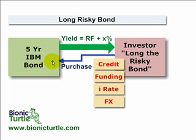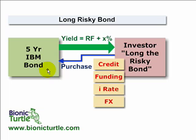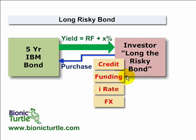Credit risk is simply the risk that the bond defaults. There is also funding risk — the investor has to raise cash in order to purchase the bond. There is interest rate risk or market risk: if the interest rate increases, the value of the bond will decrease even without the corporation defaulting. And finally, there may be some currency risk. So collectively, there is significant exposure in the outright purchase of the corporate bond, and the yield will be above the riskless rate.